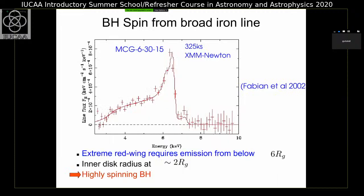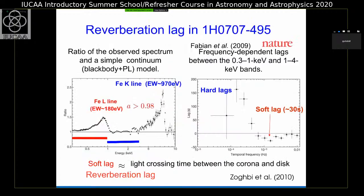The famous broad iron line from AGN MCG-6-30-15 was the first AGN to show a broad iron line, and you clearly see the line extending down to about 3 keV. Such a strong red wing is only possible if you are observing line emission from below the 6 R_g radius for a Schwarzschild black hole. Therefore, this kind of strongly relativistically broadened iron line tells us that line emission is arising from below 6 R_g, maybe down to about 2 R_g, and therefore the black hole must be highly spinning in this case.